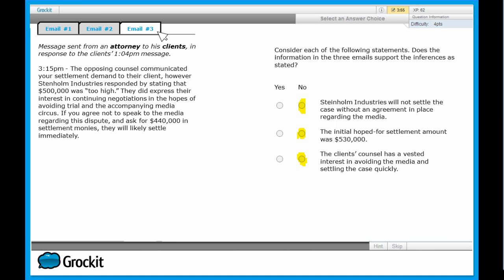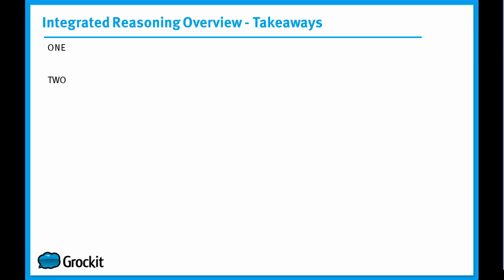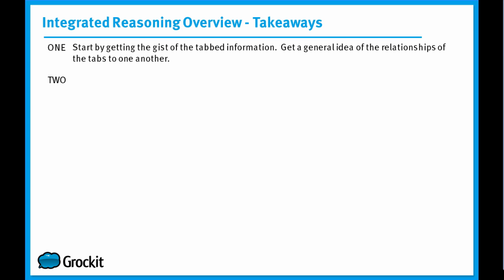So remember, when working with these multi-source reasoning questions, two big takeaways. One: always start by getting the gist of the tabbed information — get a general idea of what's in those tabs, but more importantly, an understanding of how the tabs relate to each other. Next: return to the tabs as you need to in order to research information for the individual questions. You can go back and forth amongst the three tabs as much as you want, so don't feel the need to memorize anything or get bogged down in details. Getting a good understanding of the general structure will let you know which tab to return to in order to find the necessary information to answer the question given.